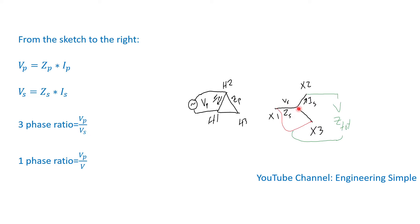Another way of performing voltage ratio measurement is the single-phase method. For the delta side, we can still measure the primary phase voltage. For the secondary, which is connected as a Y with the neutral not accessible, we short the terminals that we are not going to connect the test leads to. Then we measure the voltage — we'll call it V from one terminal to another.